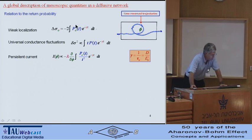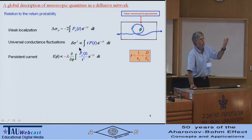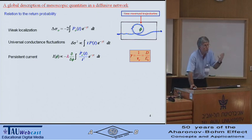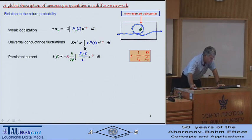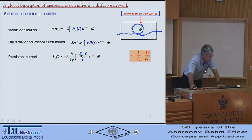Let me remind you that different mesoscopic quantities are all related to a single quantity, which is P(t) — the probability to return to the origin for a diffusive particle. Joe Imri told us this morning that the persistent current depends on some parameter, which depends on the interaction and may be modulated by magnetic impurities, and it depends also on this return probability, like other mesoscopic quantities.